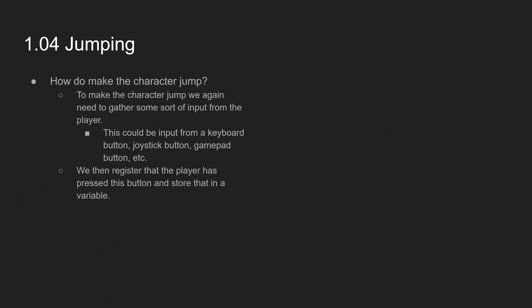So jumping. Jumping is actually super easy once we have everything all set up. And to make the character jump, we again need to gather some sort of input from the player. And this could be input from a keyboard button, joystick button, gamepad button, what have you. Then we register that the player has pressed this button and store that in a variable.